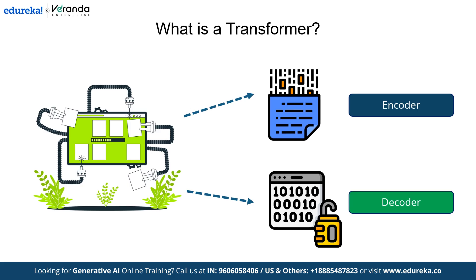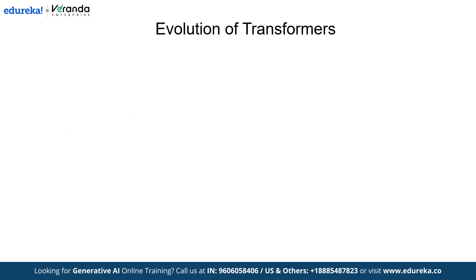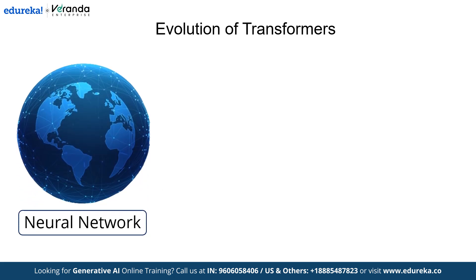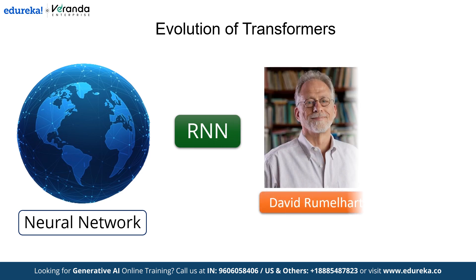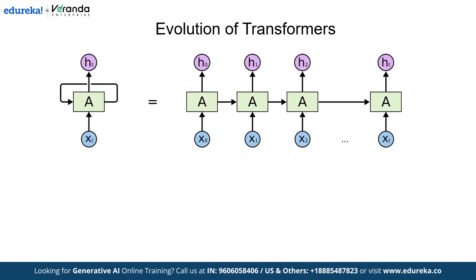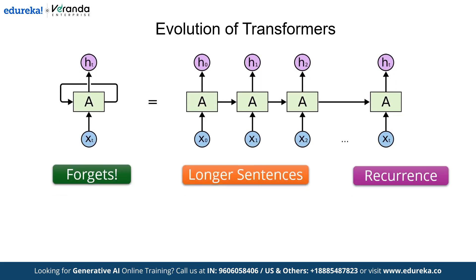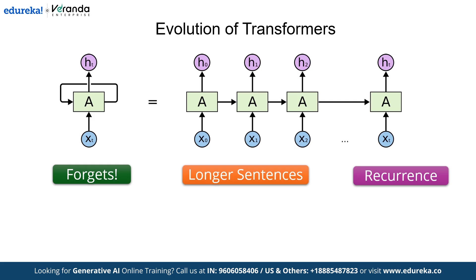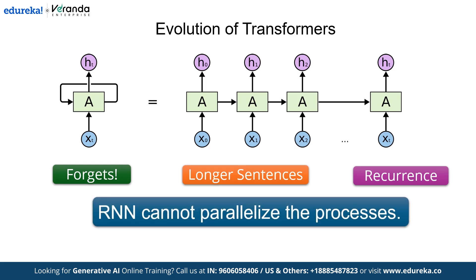Now that we have the idea of transformers, let's discuss how they evolved. Before transformers, there were other neural networks like RNNs — recurrent neural networks — invented by David Rumelhart in 1986. However, RNNs faced significant challenges: they would forget early parts of the sequence as they processed longer ones and couldn't handle dependencies efficiently. Additionally, RNNs relied on recurrence, which made them inefficient and incapable of parallelization.